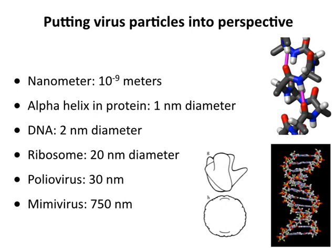Just to remember the size and dimensions we're talking about: we often use nanometers and angstroms. Nanometers are 10 to the minus nine meters. An alpha helix in a protein is typically one nanometer in diameter. The smallest viruses are 20 to 30 nanometers in diameter. DNA is two nanometers, a ribosome is 20 nanometers, and poliovirus is 30 nanometers. A very large virus is mimivirus at 750 nanometers, which dwarfs polio and ribosomes. And the pandoravirus, which I mentioned, is 1,000 nanometers — one micron long, visible in a light microscope.